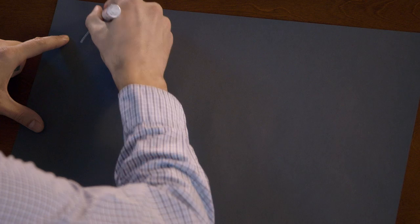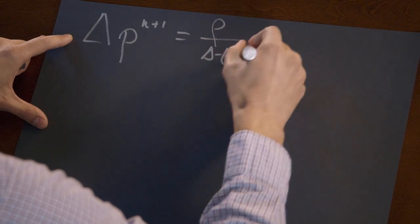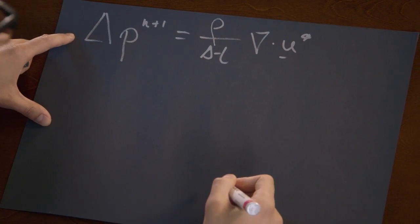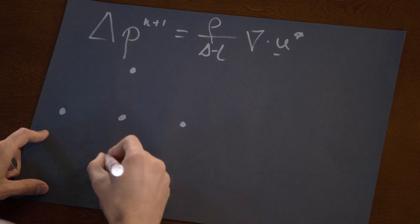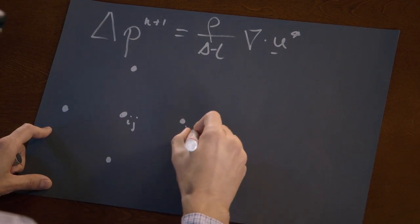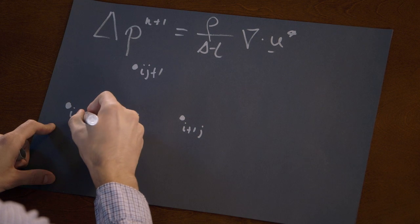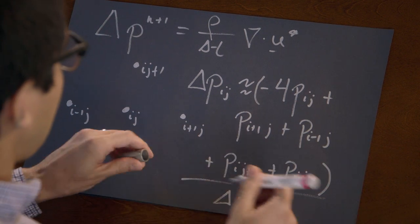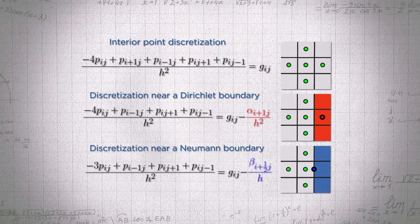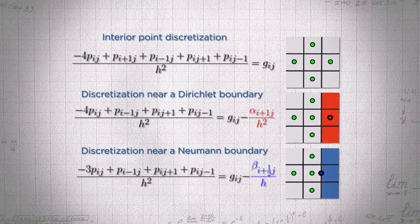We take the pressure equation in the case of constant density — the most common case — where the Laplacian of the pressure equals rho over delta T times the divergence of the U-star velocity. We discretize this on a given voxel by looking at adjacent voxels: for voxel i,j in two dimensions, we look at the four adjacent pressure voxels. With this structured representation, we get a simple numerical approximation of the Laplacian. Replacing the Laplacian with this approximation gives an unknown for every pressure in a fluid voxel, amounting to a linear system of equations to solve for the numerical result.